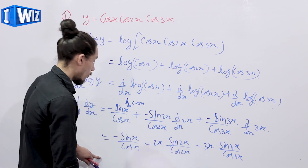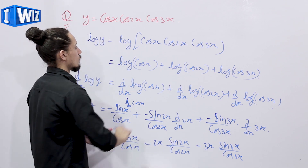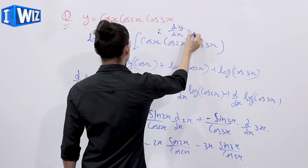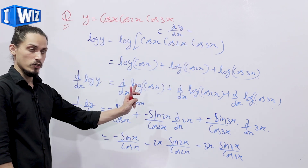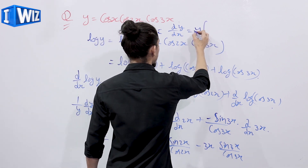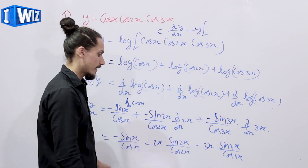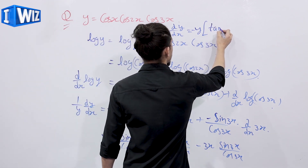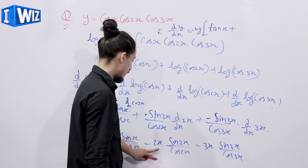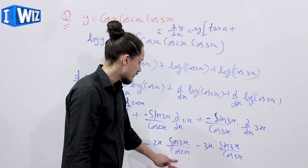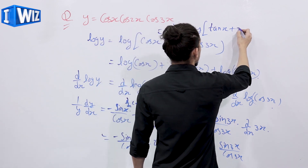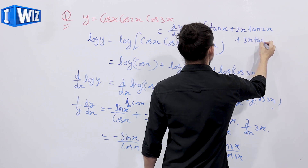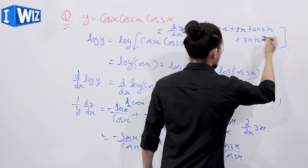So the final result, multiplying both sides by y: dy/dx equals y times minus tan x minus 2 tan 2x minus 3 tan 3x, and hence the result.